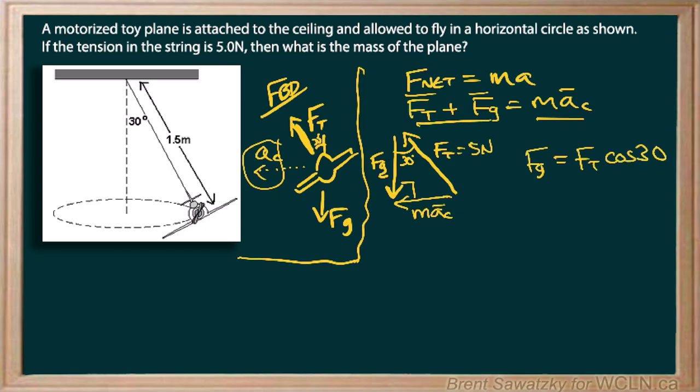Just some trig and looking at that, and so we can say FG is just MG and then we have FT cos 30, and so our mass is equal to FT cos 30 all over G. And if we plug in the numbers for that we come up with 0.44 kilograms.